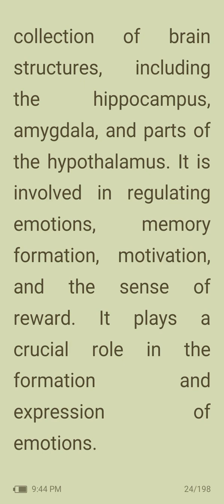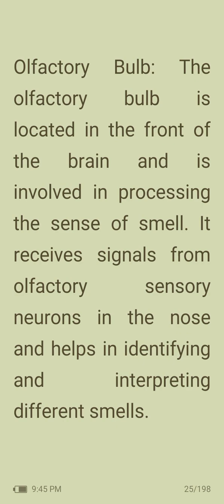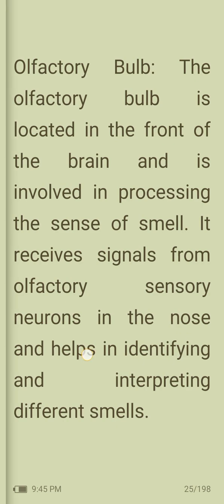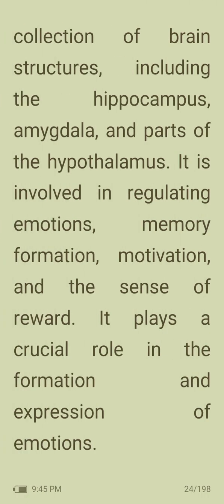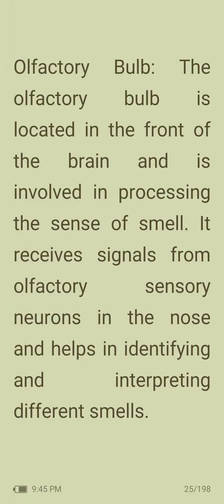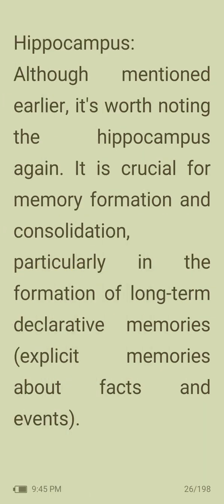Limbic system: a collection of brain structures including the hippocampus, amygdala, and parts of the hypothalamus. It is involved in regulating emotions, memory formation, motivation, and sense of reward, playing a crucial role in the formation and expression of emotions. Olfactory bulb: located in the front of the brain, it is involved in processing the sense of smell, receiving signals from olfactory sensory neurons in the nose. Hippocampus revisited: it is crucial for memory formation and consolidation, particularly in the formation of long-term declarative memories — explicit memories about facts and events.